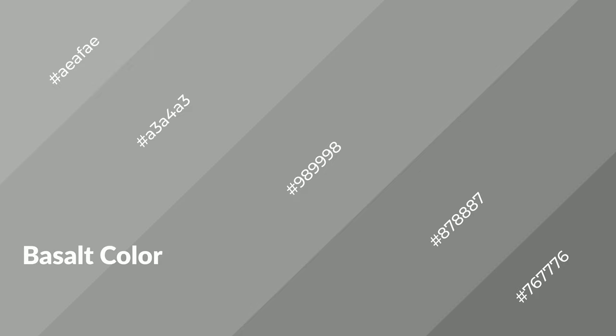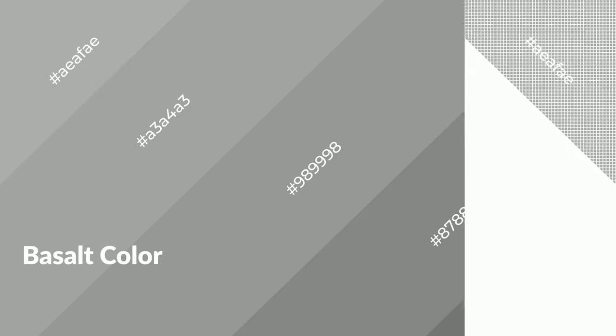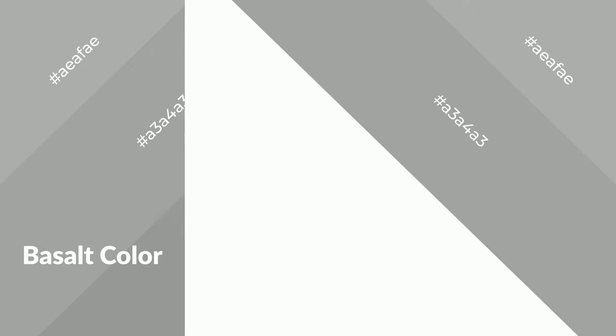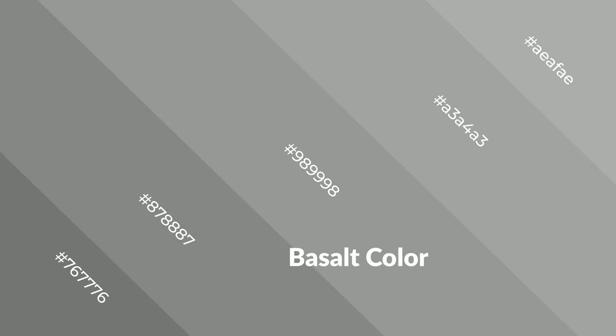Shades create depth and drama. Basalt is a cool color and it emits calming, serene, soothing, refreshing, spacious, unwinding, peace, and relaxed emotions. Cool colors are like water, ice, sky, grass, soft, and snow. You can see them used in baby products.